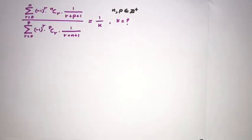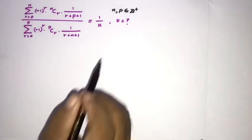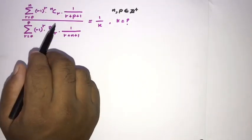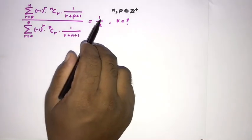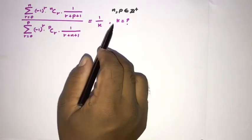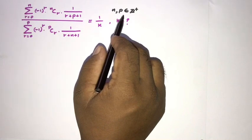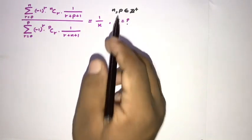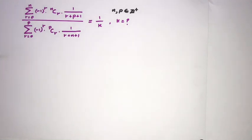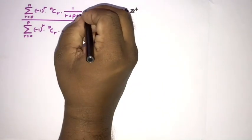Welcome to the Mathematics channel. In this video we are going to solve an interesting question. Here we have two series, and they are equal to 1 over k. We need to find k, where n and p are positive integers.